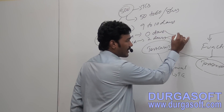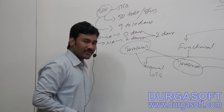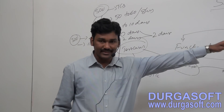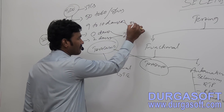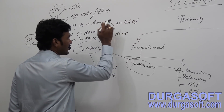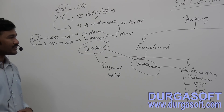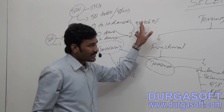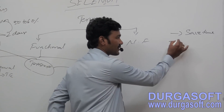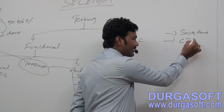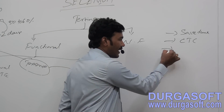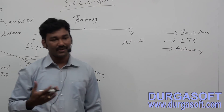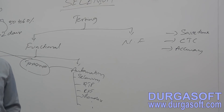So we have taken around two days total to execute all 500 test cases — previously it was ten days, now it is two days. The main advantage is we can save time. On average, around 50 to 60% of the time can be saved by using automation. When you save time, it is directly proportional to cost — meaning we can reduce cost to the company. We can also maintain accuracy, because the same scripts can be executed in the same manner again and again.